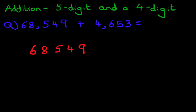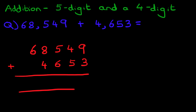68,549 plus 4,653. Make sure you get this right. Make sure that you write the numbers down in nice, neat columns. Let's label the columns as well.